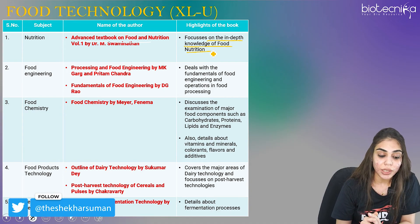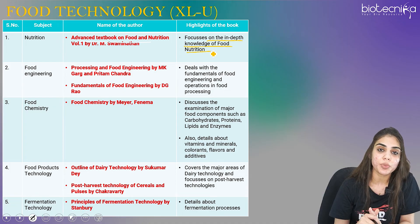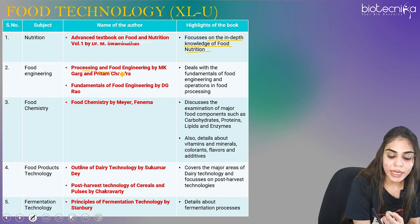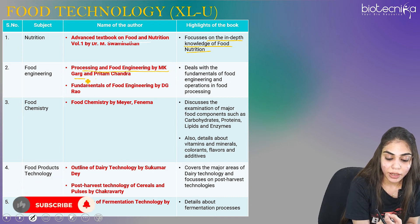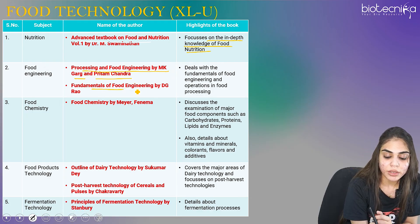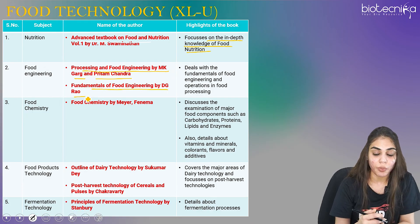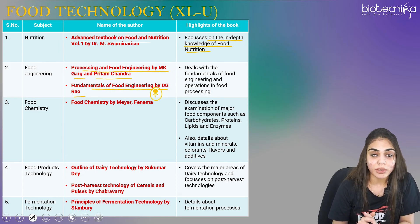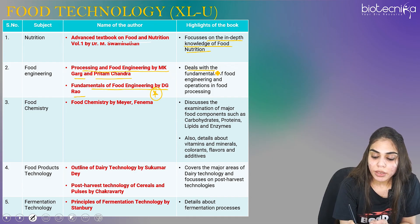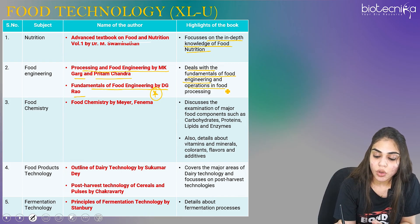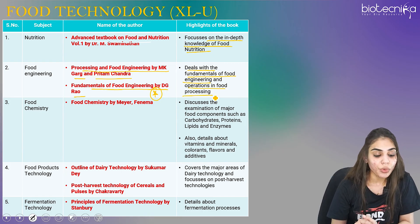The second is food engineering, where you have to learn all engineering principles of food. You can refer Processing and Food Engineering by M.K. Garg and Preetam Chandra — an Indian author book — or Fundamentals of Food Engineering by D.G. Rao. The D.G. Rao book deals with fundamentals of food engineering, including all food engineering principles and all operations involved in food processing.